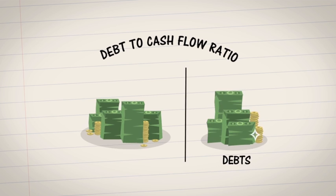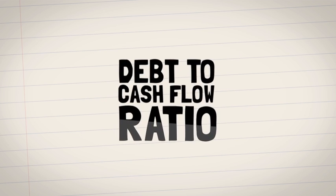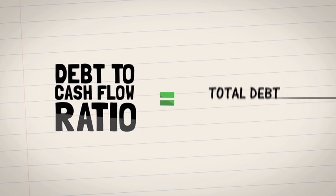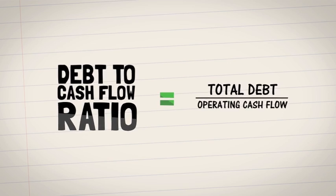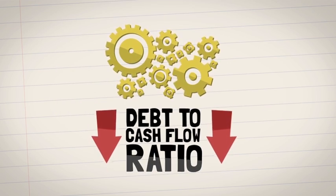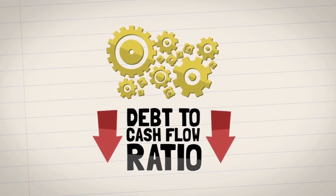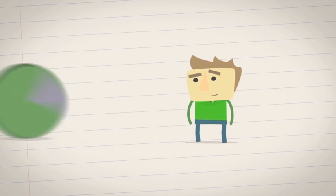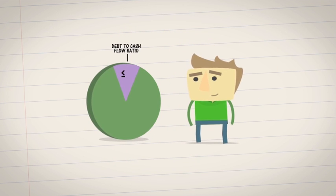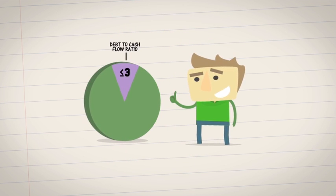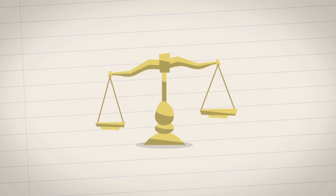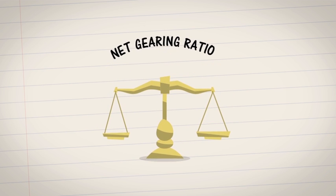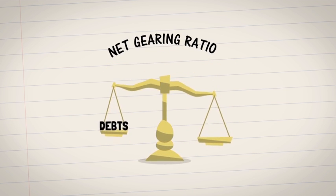The fifth ratio is the debt to cash flow ratio. This measures the company's debts against its operating cash flow. To calculate this, take the company's total debt and divide it by operating cash flow. The lower the ratio, the better the company's ability to finance their operations. Any ratio less than or equal to three is considered good.